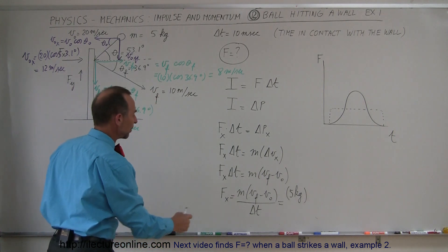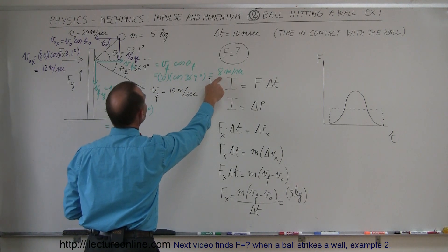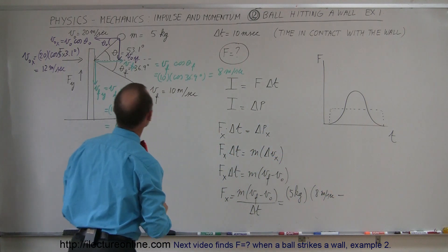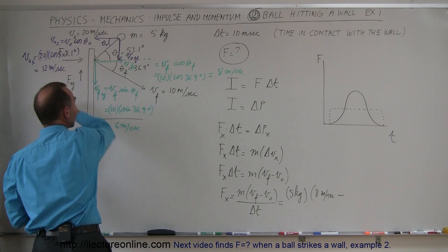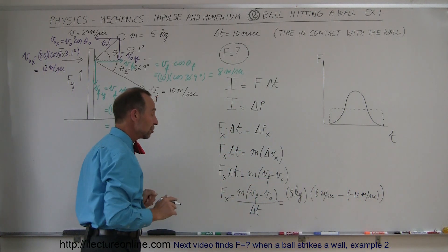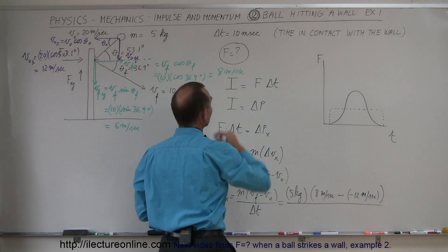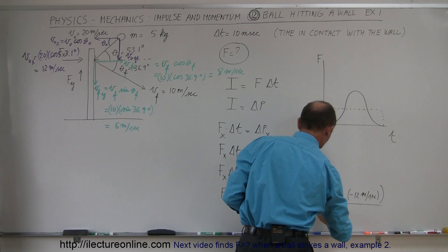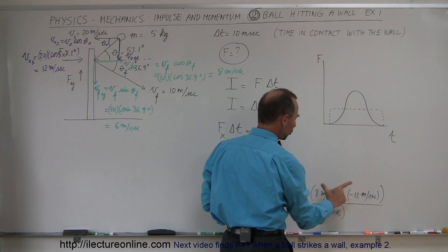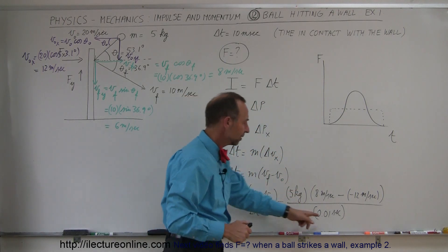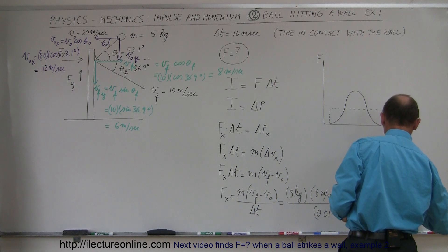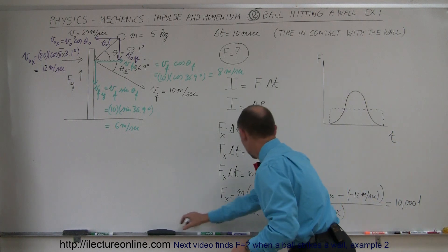Coming back to the x-direction calculation: v-final in the x-direction is positive 8 meters per second, minus the initial velocity in the x-direction which is negative 12 meters per second. So we have 8 minus (−12), which is 20 meters per second, times 5 kilograms gives 100 kilogram-meters per second, divided by the change in time of 10 milliseconds, which is 0.01 seconds. That's like multiplying by 100, so 100 times 100 is 10,000.